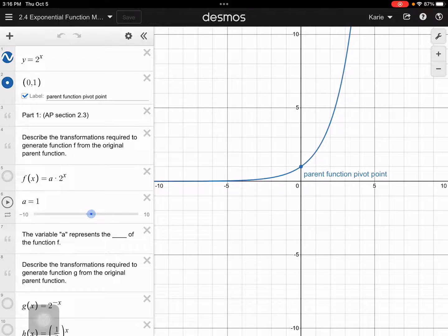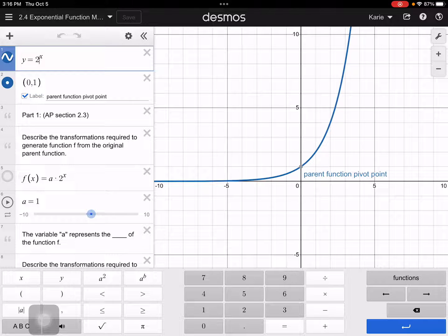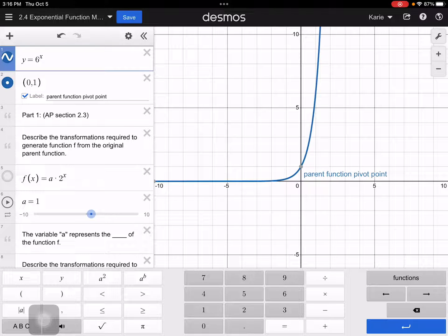Okay, so the first thing, we've got one of our parent functions for an exponential function, y equals 2 to the x. I could come in here and change that to another function. So if it were 6 to the x, it still has the basic same shape, and it still goes to the point (0,1). That's what we often will call the pivot point of an exponential function. And these different parent functions look the same, but they might have different degrees of steepness.